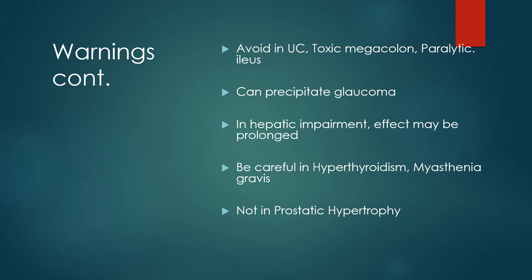Remember, constipation is part of the side effects of atropine. If someone already has paralytic ileus with peristalsis that is not progressing, adding atropine is a double burden. Atropine can also precipitate glaucoma. In hepatic impairment, the effect of atropine will be prolonged, so we must be careful with dosage to avoid inadvertently doubling the level of atropine.